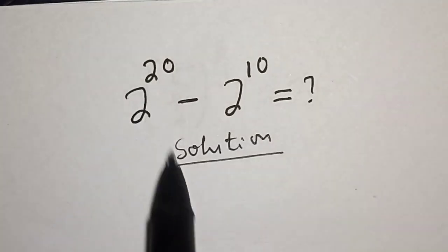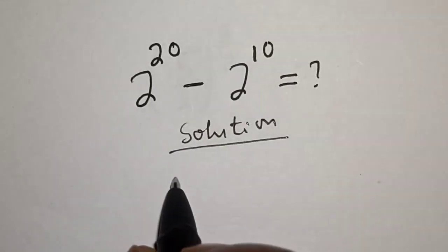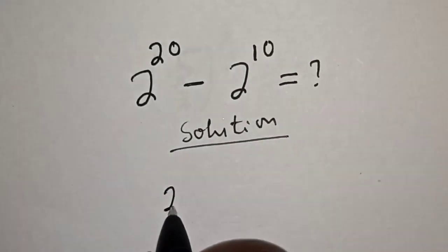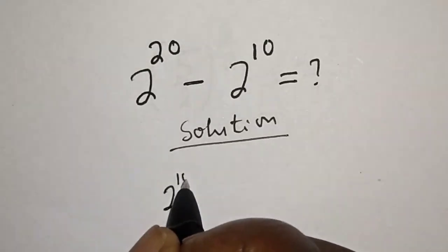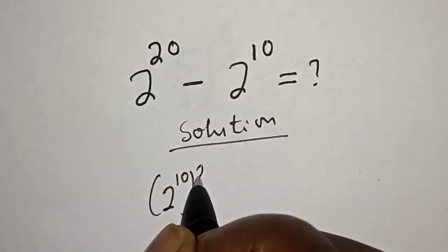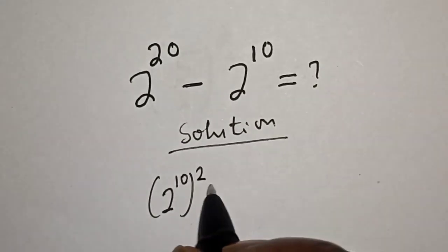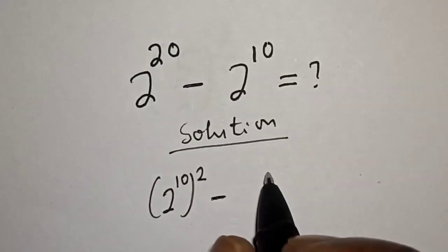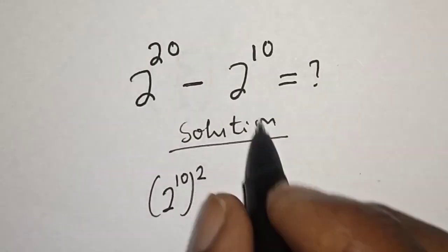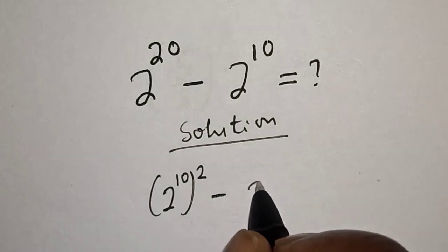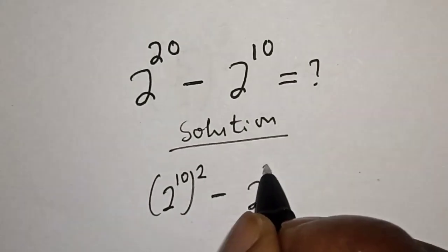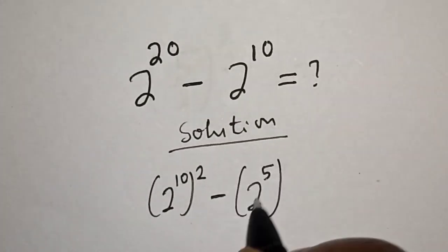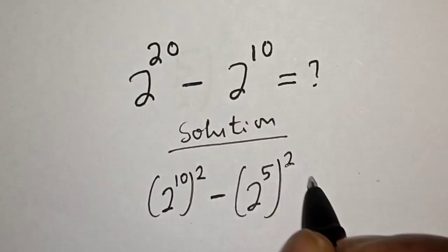2 raised to power 20 can be written as 2 raised to power 10, times raised to power 2, minus 2 raised to power 10, calculating as 2 raised to power 5, raised to power 2.